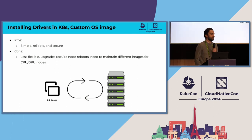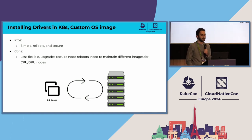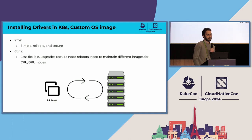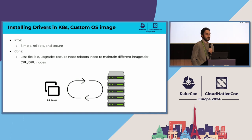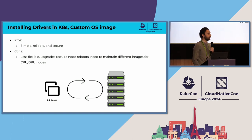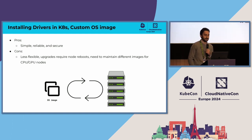The second approach is to build your own operating system image for your GPU worker nodes and embed the driver in it — maintain your own image. This is simple to understand, reliable, and also secure because you're not installing things at runtime. The major con is it's not as flexible, because if you want to deploy new drivers, you typically have to rebuild your OS image, which may take time. Also, if you have existing nodes you need to reprovision them, and if you have CPU and GPU nodes you may need to maintain different images, which adds overhead.